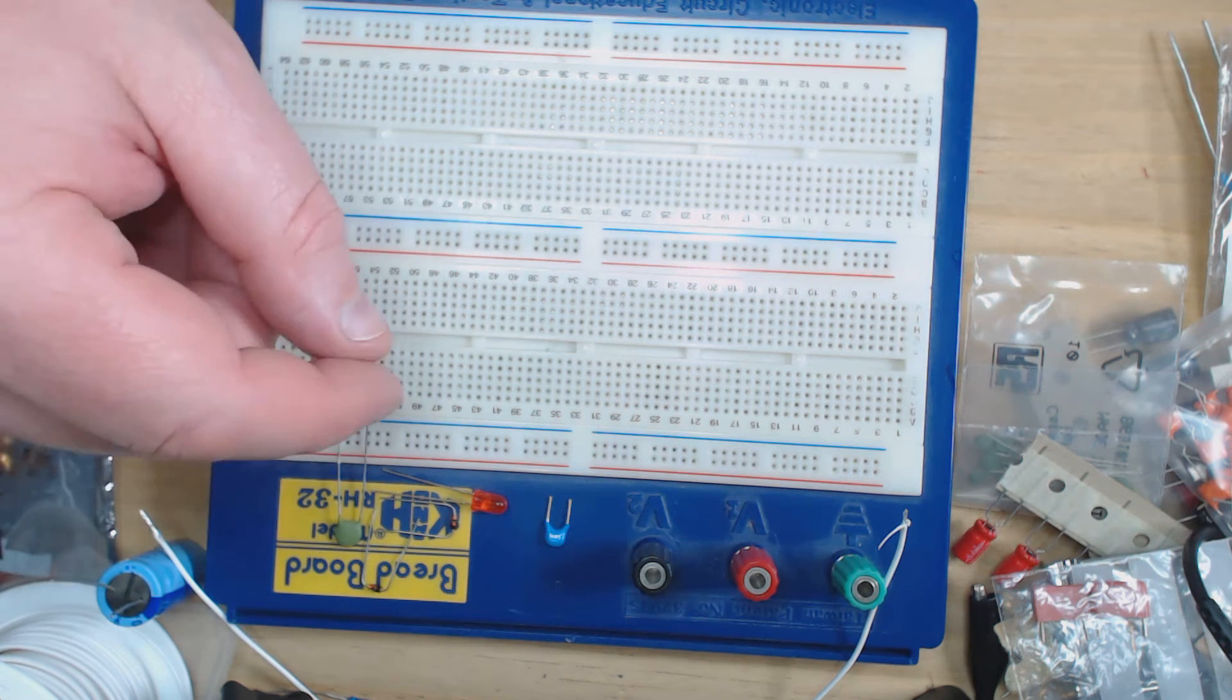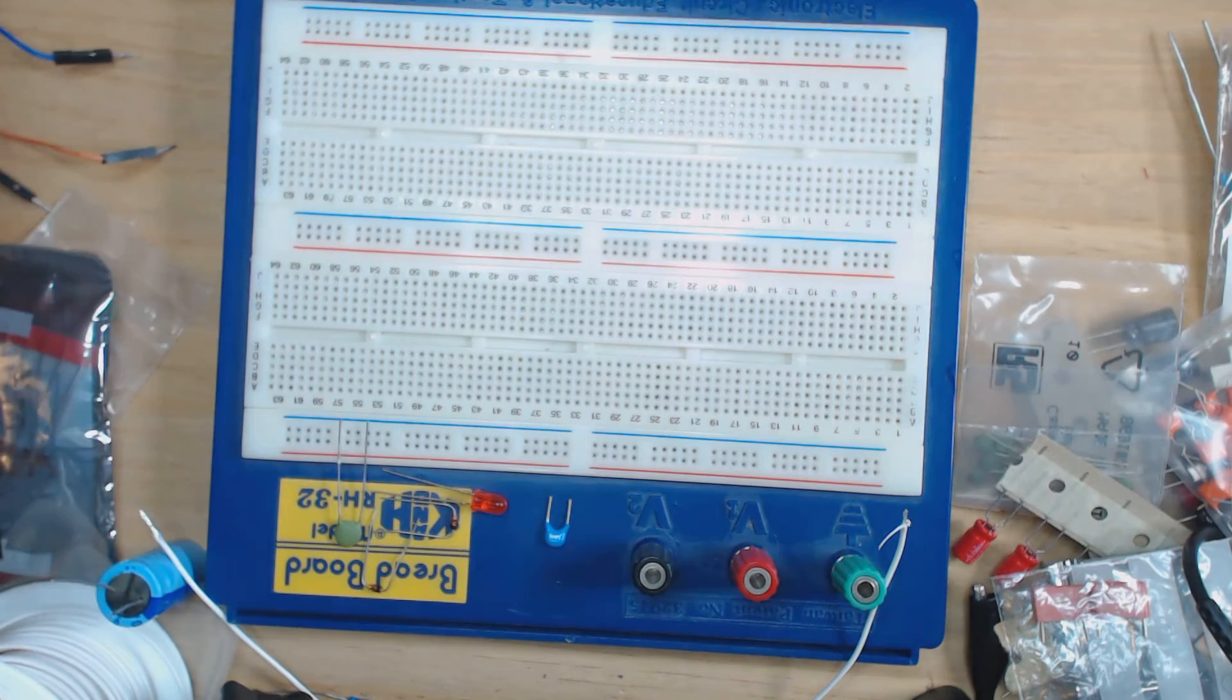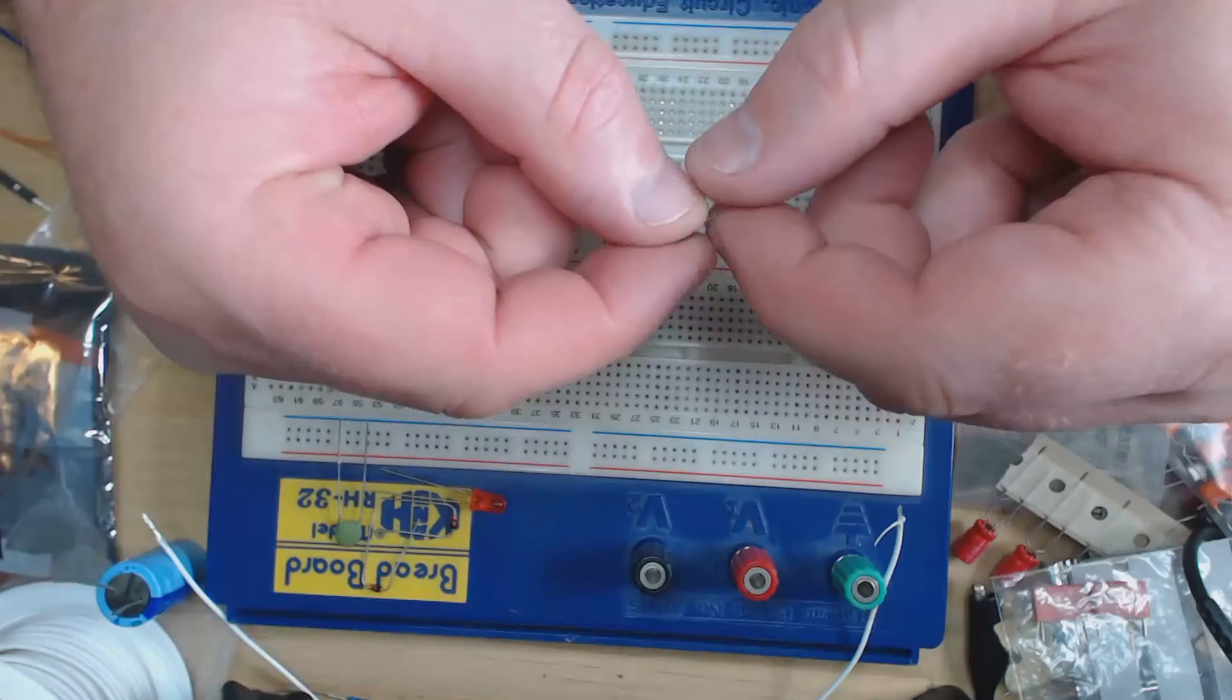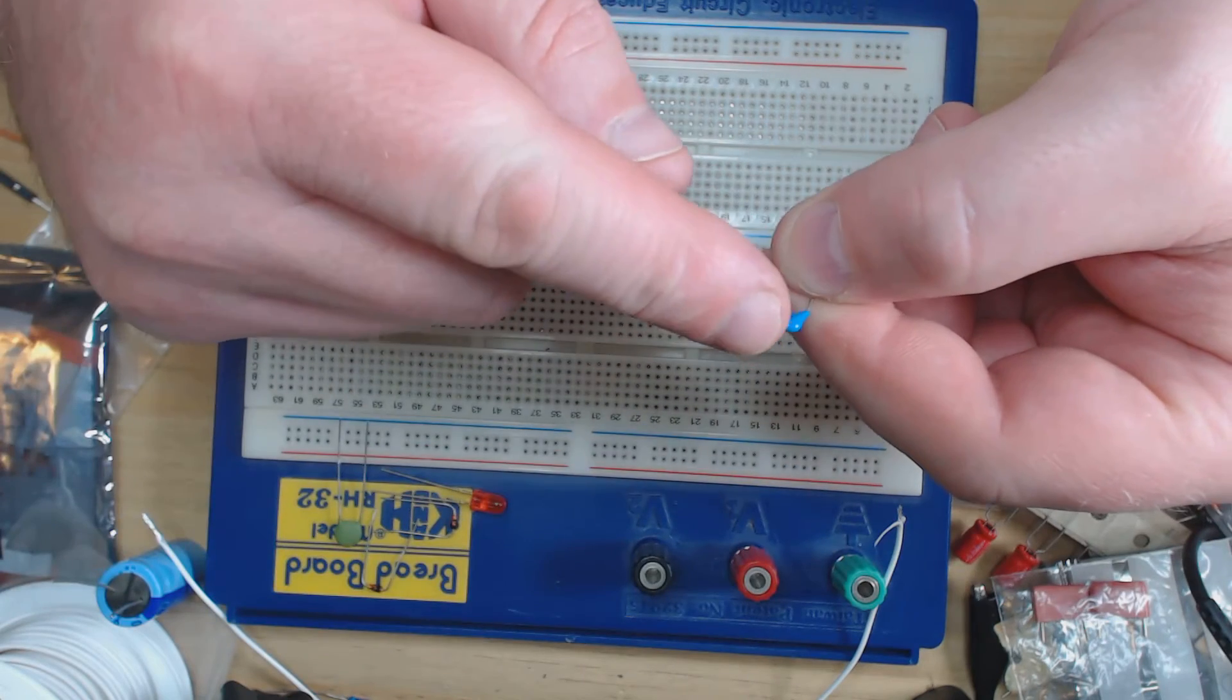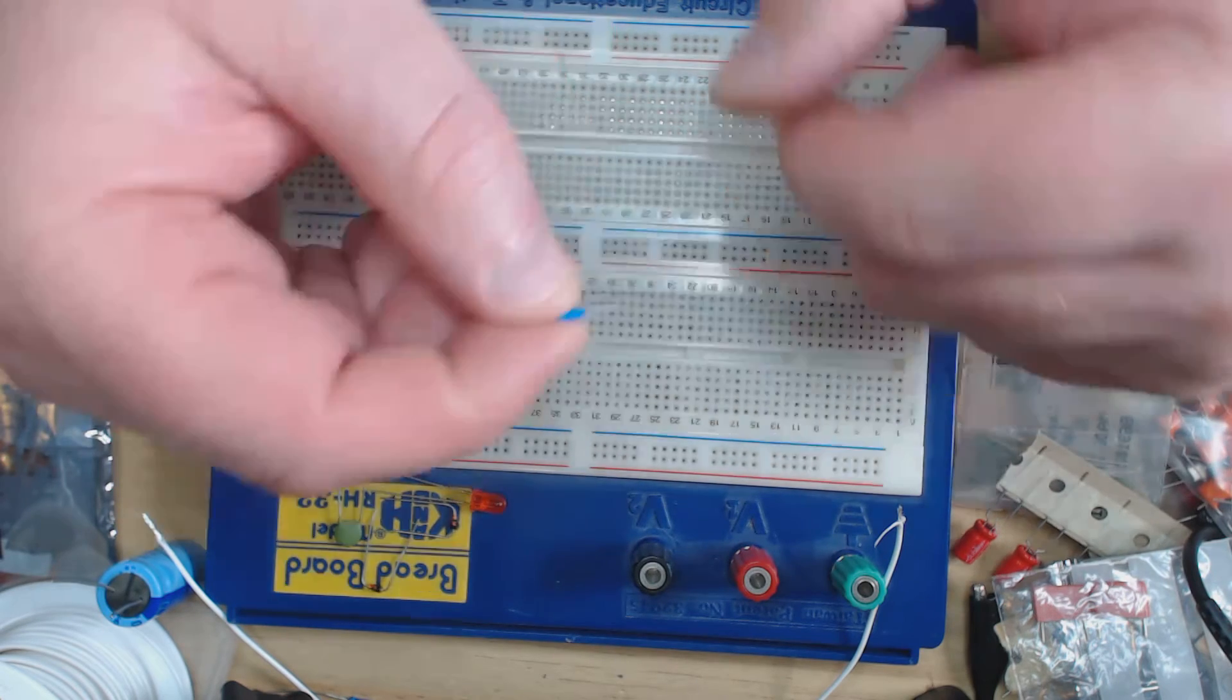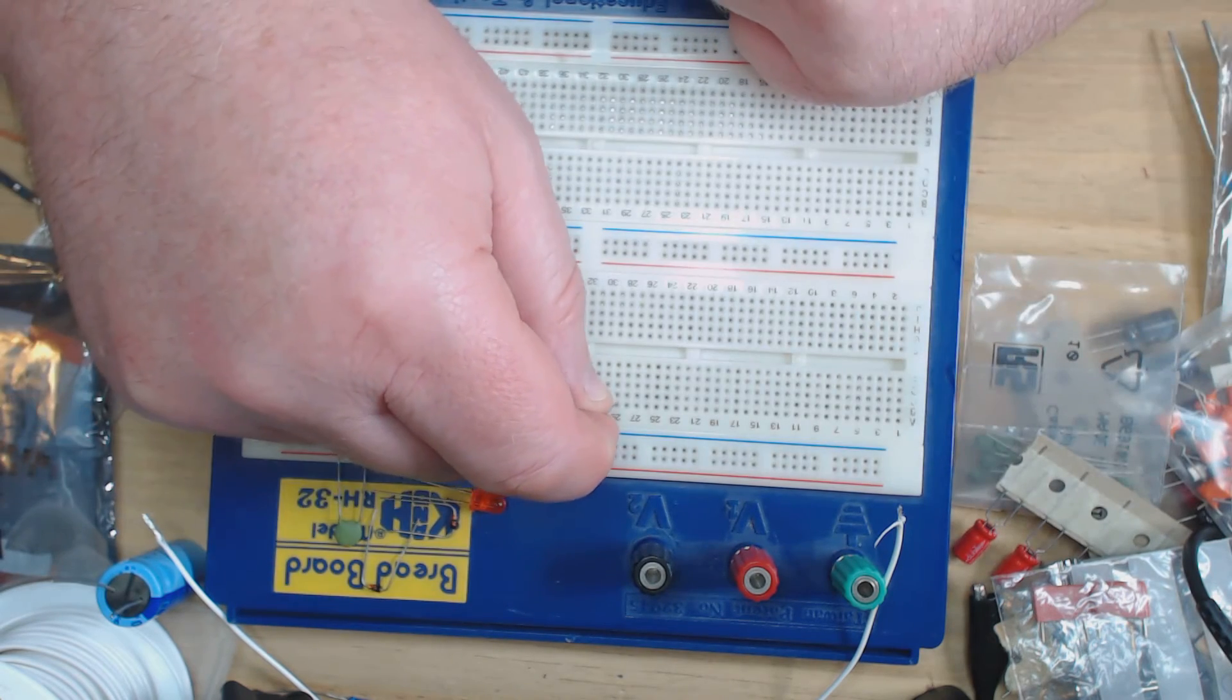Basically I went through the junk box and this is how I've done it. So essentially what I've got here is a 220 nanofarad ceramic capacitor and I'm just going to plunk that in rows 29 and 31 of my breadboard. Doesn't really matter much.